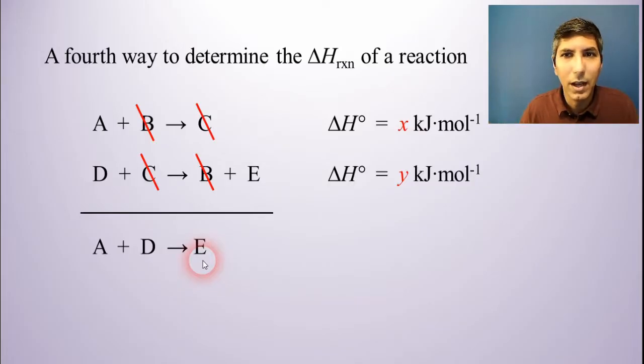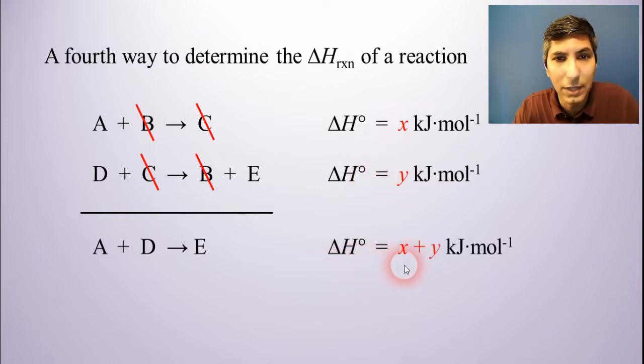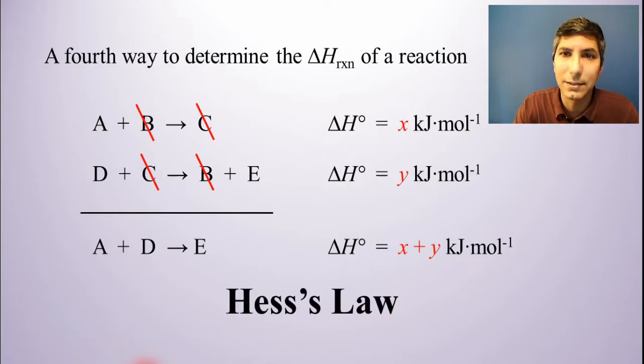So a completely different reaction than the first two reactions that you had. Well, guess what? If you can add the first two reactions and get a third reaction, to find the delta H of this third reaction, all you have to do is add up the individual delta H's for those reactions. So the delta H for this new reaction is just X plus Y. This is actually a pretty neat way to calculate the delta H of a reaction. We call this Hess's Law.